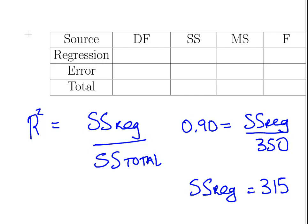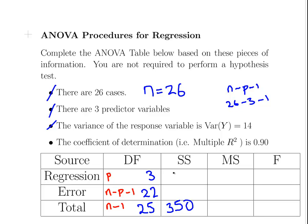So it's 315. Now the sum of squares for error is just the difference of the two. It's implicit in that information—the ratio is whatever is left. So if it's 90%, the other ratio is 10%.